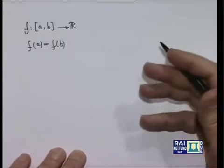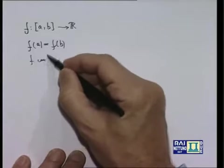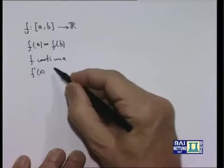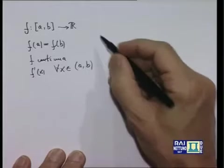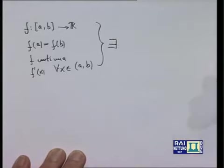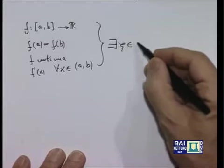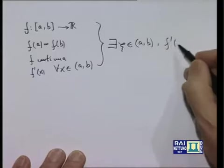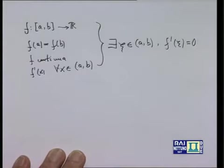Ebbene, il teorema che ci apprestiamo a dimostrare afferma che in queste ipotesi — f è continua, f' esiste ed è una quantità finita almeno per tutti gli x dell'intervallo aperto (a, b) — esiste almeno un punto interno all'intervallo [a, b], il teorema non dice che ce ne sia uno solo, dice che ce ne è almeno uno, indichiamolo con la lettera greca ξ appartenente all'intervallo (a, b), tale che la derivata prima si annulla: f'(ξ) = 0.